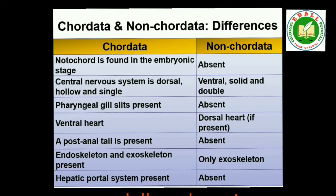A comparison of salient features of chordates and non-chordates: 1. Notochord present in chordates; absent in non-chordates. 2. Central nervous system is dorsal, hollow and single in chordates; while in non-chordates it is ventral, solid and double. 3. Pharynx perforated by gill slits in chordates; gill slits absent in non-chordates. 4. Heart is ventral in chordates; while in non-chordates heart is dorsal, if present. 5. A post-anal part (tail) is present in chordates; while in non-chordates post-anal tail is absent.